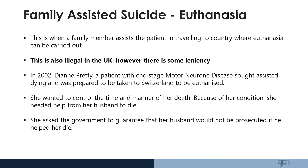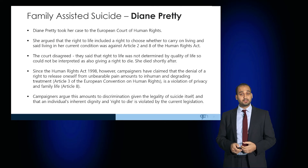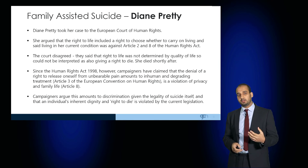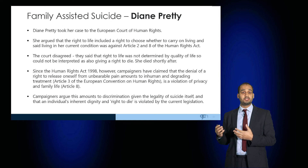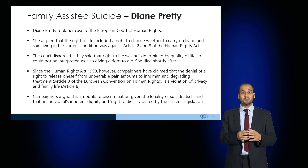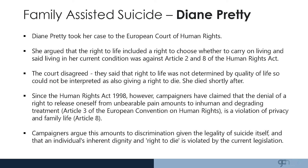Diane Pretty asked the government to guarantee that her husband would not be prosecuted if he helped her to die. She took the case to the European Court of Human Rights, arguing that the right to life included the right to choose whether she should carry on living under her current condition — invoking Articles 2 and 8 of the Human Rights Act. However, the court disagreed, saying that the right to life was not determined by quality of life and so could not be interpreted as also giving a right to die. She died shortly afterwards. Since the Human Rights Act 1998, campaigners have claimed that denial of the right to release oneself from unbearable pain amounts to inhuman and degrading treatment, a violation of Article 8.